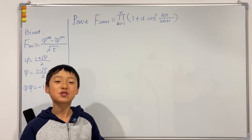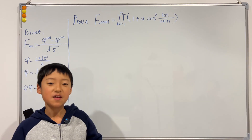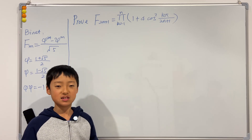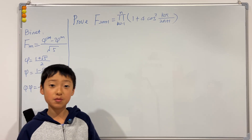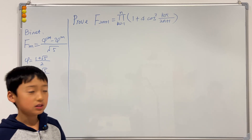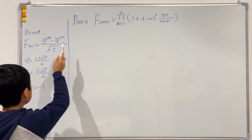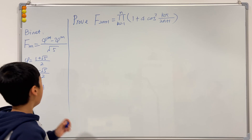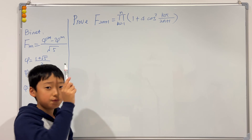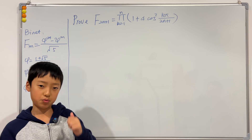Hi guys, welcome back to another video. Today's question is actually a bonus video from my last video. In this video we will be deriving from Binet's theorem, which says that the Fibonacci number equals a certain expression, and I'm going to derive from this to prove that the (2m+1)-th Fibonacci term equals a specific product formula.